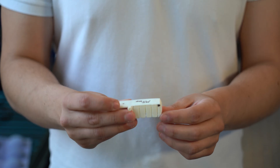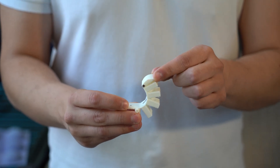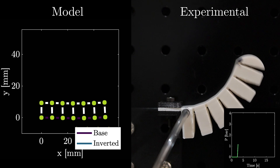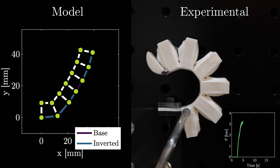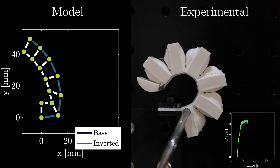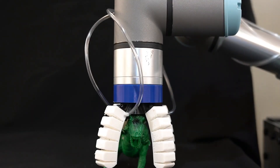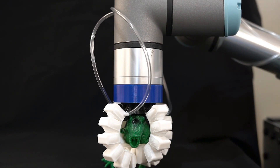Depending on how many domes I invert, it will get into a specific position or a specific curvature, and this allows us to put it in different systems such as creepers, walkers, or other types of robots.